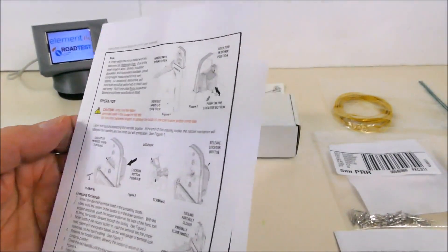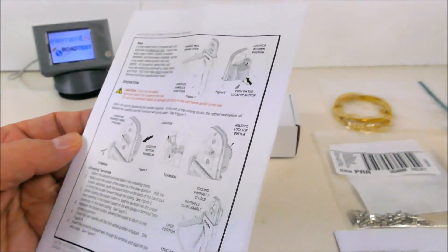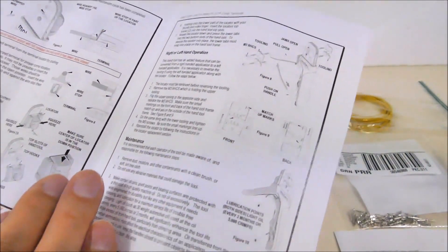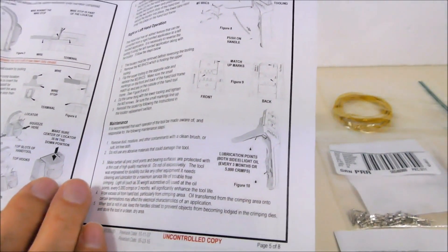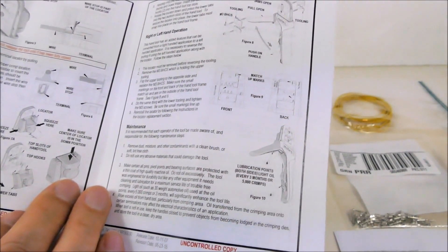Finally, there's a document that outlines the features of the crimper, how to maintain it, how to oil it, and how to adjust it to make ideal crimps. For example, the oiling is supposed to be done every three months or 5,000 crimps, and it's just a very light oiling.